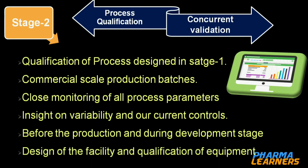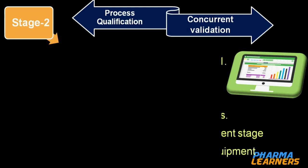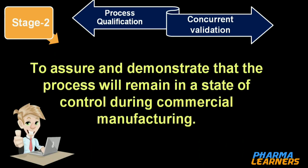The goal of this stage is to assure and demonstrate that the process will remain in a state of control during commercial manufacturing. If you read about concurrent validation, we perform the same things I have explained here for stage 2.